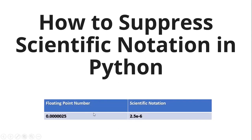As you can see on the screen, this is an example of a floating point number, and this is how it can be represented in its scientific notation. So let's say that you have this number at your disposal which is represented in its scientific notation. How are you going to suppress it such that it is represented in its decimal format? That is exactly what we will be learning in this video.